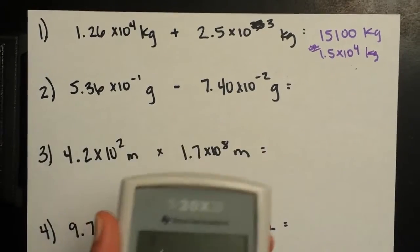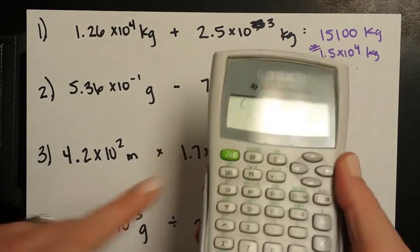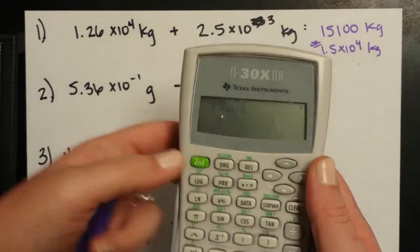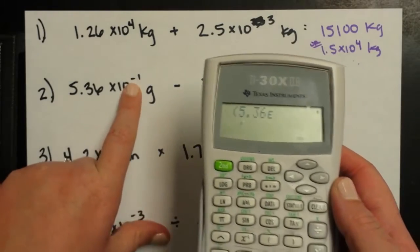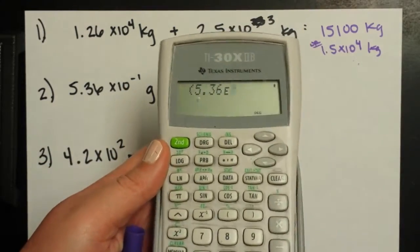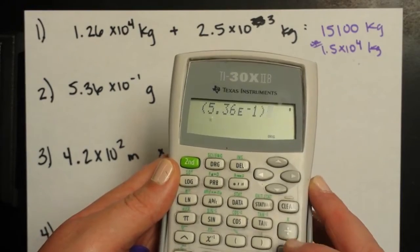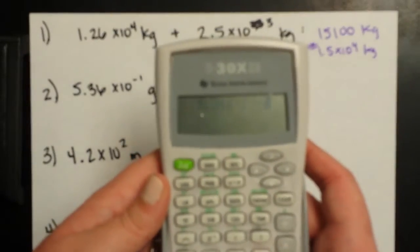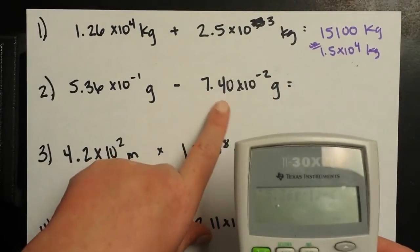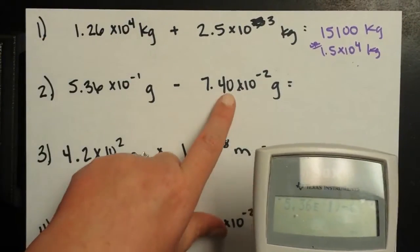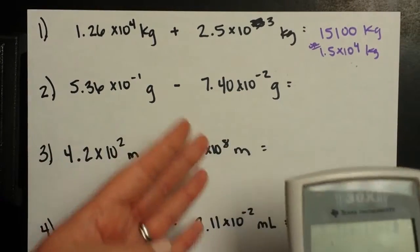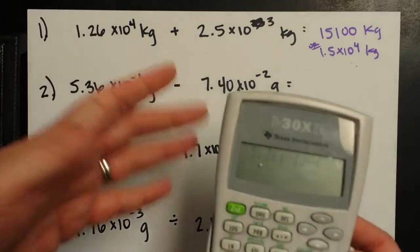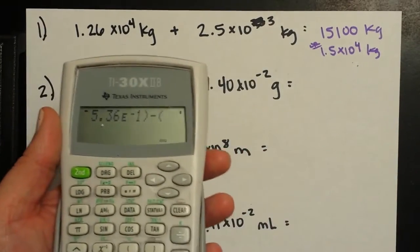Let's look down here. I started some parentheses. So the coefficient 5.36 times 10 to the negative first power. Close my parentheses. And now I'm subtracting. So minus 7.40 times 10 to the negative 2. And that 0 there, you can put if you are more comfortable. If it's a trailing zero behind a decimal place, it's there for significant digits, but it's not going to affect your answer if you leave it out in the calculator.